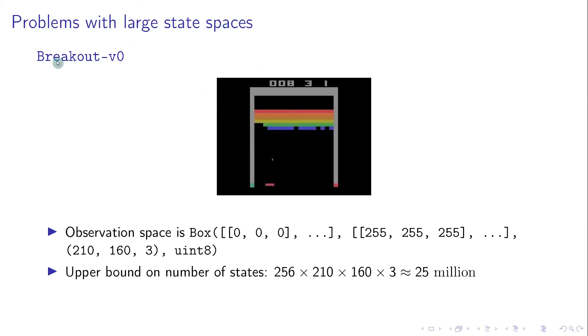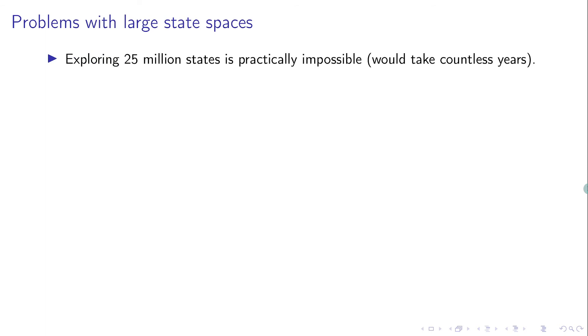An example of such a problem is the gym environment Breakout V0, where the agent must learn to maximize the score in the game of Breakout. The agent observes the game screen at each step and therefore each observation is an RGB image of size 210 by 160. This means that there can be as many as 25 million different states in this problem. Now exploring 25 million states during policy iteration is practically impossible because it would take forever.